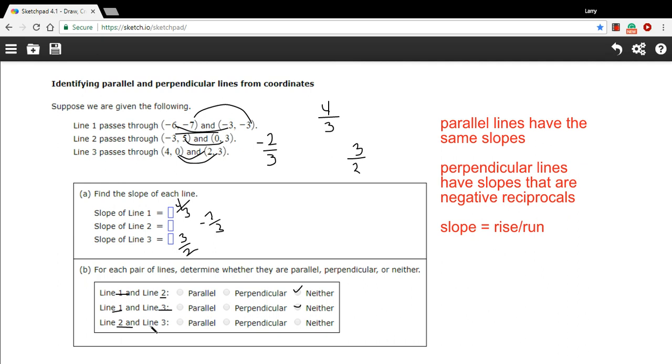And then finally, comparing lines 2 and 3. So 2 is negative 2 thirds. 3 is 3 halves. They're not the same, so they're not parallel. They are negative reciprocals. If you flip this fraction upside down and put a negative sign on it, you'd have this fraction. So that means those are perpendicular lines.